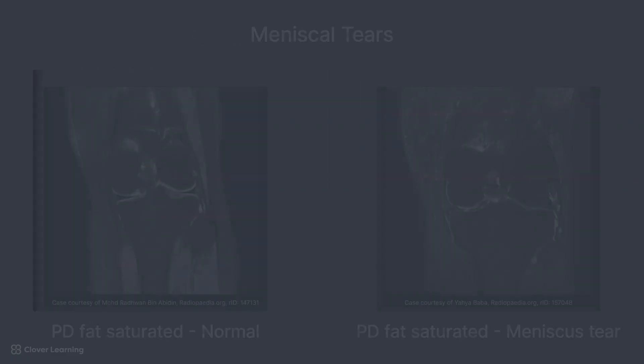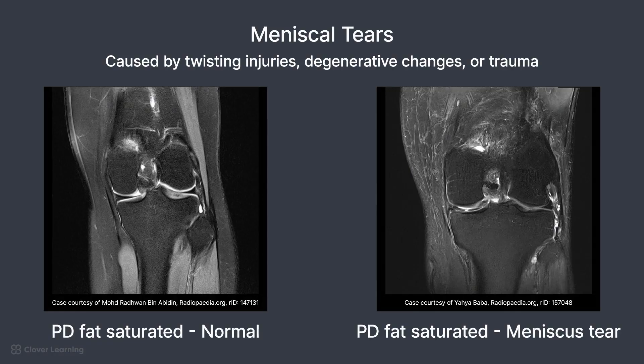Meniscal tears are often caused by twisting injuries during sports, degenerative changes in older adults, or trauma. They may also be further classified as bucket handle, flap, or radial tears. They appear as high signal defects within the meniscus on T2-weighted images, or irregular disruptions on proton density-weighted images.